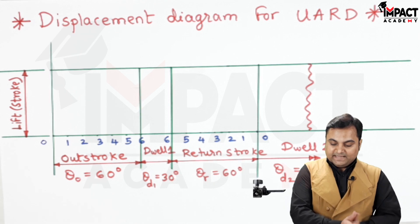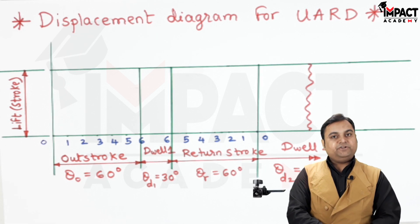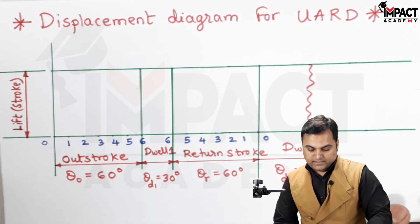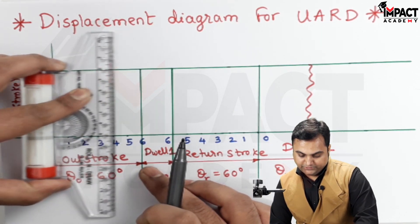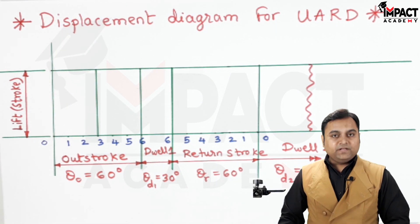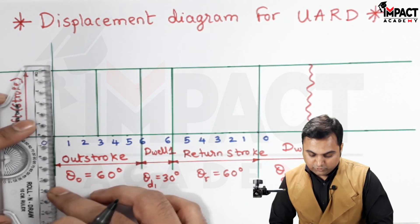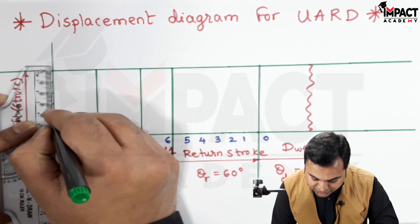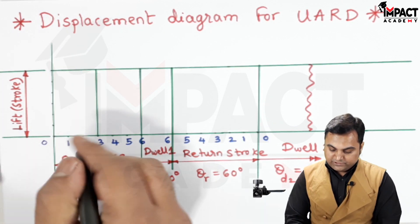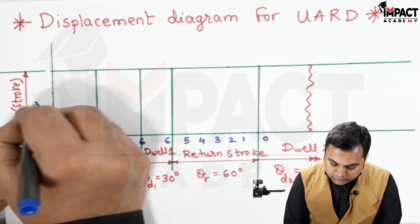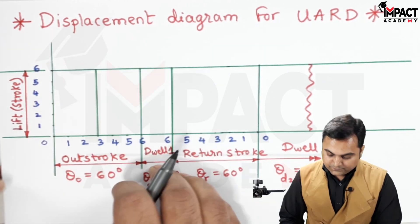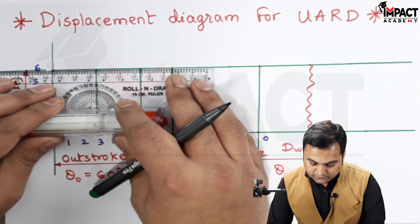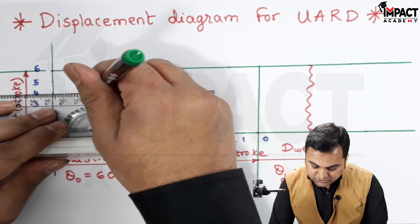Now, how to plot the diagram for UARD motion — starting with the outstroke. The first step is to take the midpoint of the outstroke, which is at position 3, and project a light vertical line from that midpoint. Then divide the lift into 6 equal parts — one centimeter each — giving notations 0, 1, 2, 3, 4, 5, and 6. Similarly divide the vertical line into 6 equal parts, projecting the divisions.